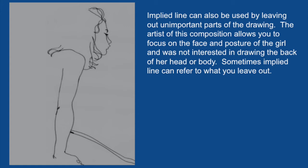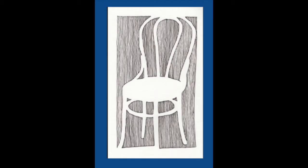Implied line can also be used by leaving out unimportant parts of the drawing. When this picture first appeared, you probably knew immediately it was a girl leaning on her hands with her posture pushed forward. You may not have noticed that any lines were missing at first glance. As you explore it, you realize there is no line at the back of her body. In this example, implied line refers to what is left out. When I found another example, I thought it was great, but on closer inspection, I realized it was not implied line — the chair is outlined. On taking a closer look, you'll see the outlines of the chair. There's still negative space, but it's not technically implied line.